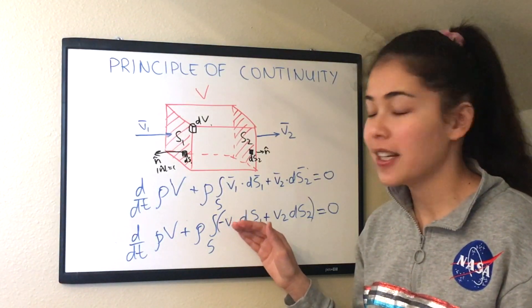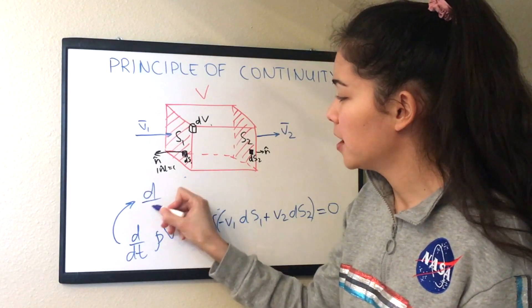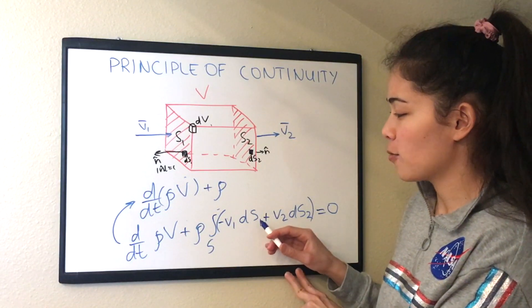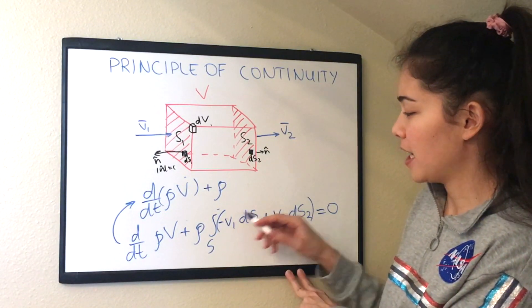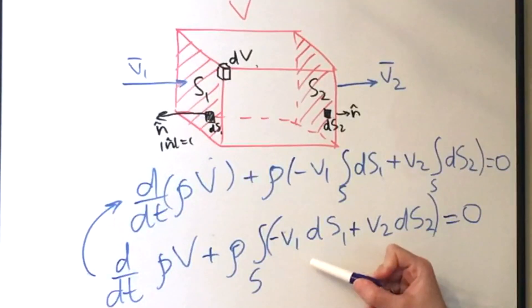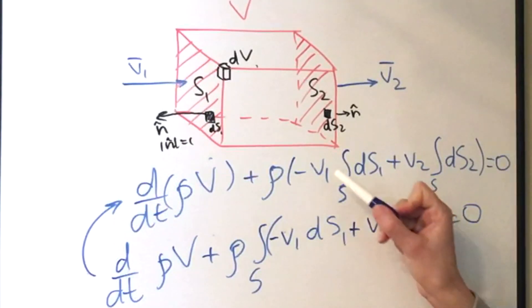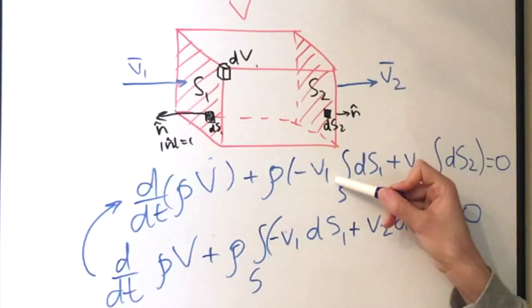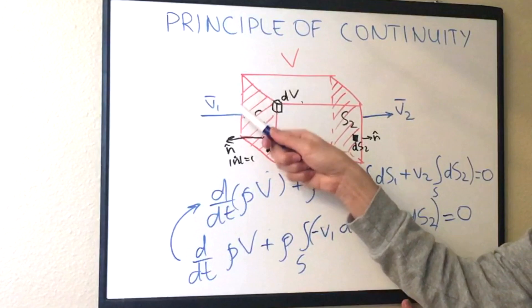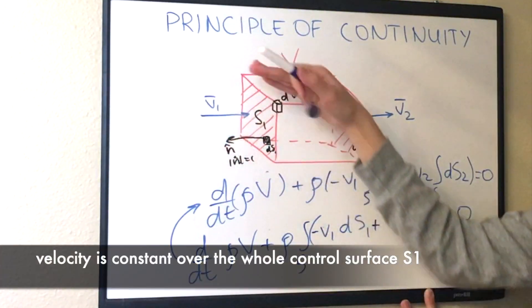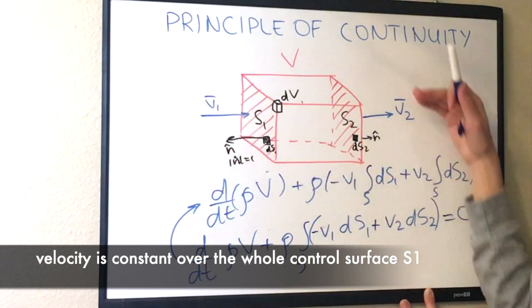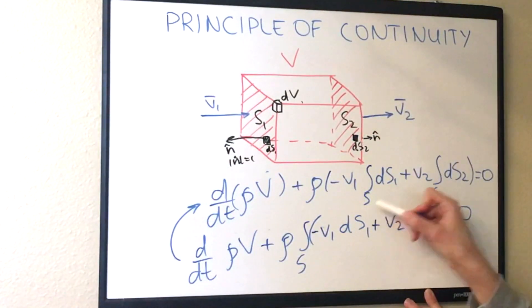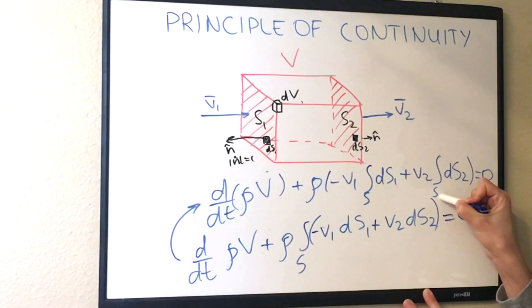Now we continue simplifying. Just rewrite this term for now. And now we can finally get rid of ds1 because we don't have any vectors inside the integral. So we simplify this expression by taking out v1 here and v2 over here outside of the integral. Because we assume that velocity v1 is the same over the whole area here. And the integral goes here because it has a distributive property.